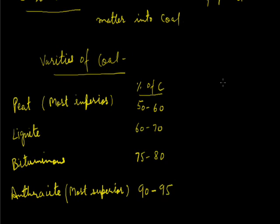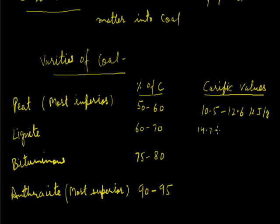Now on burning these different varieties of coal will get different amount of heat energy and that we know as calorific value. The variety of coal which is having less amount of carbon would have less calorific value, and the variety of coal anthracite which is having highest amount of carbon will have highest calorific value. The calorific value of these varieties of coal are: peat, it is around 10.5 to 12.6 kJ per gram; lignite, it is 14.7 to 18.9 kJ per gram; bituminous, 28 to 31 kJ per gram; and anthracite, 31 to 33 kJ per gram.